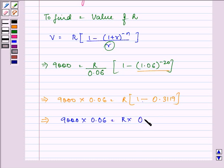So to find out the value of R we will be multiplying 9000 with 0.06 and dividing it by 0.6881 and after doing the calculation we have the value as rupees 784.77.